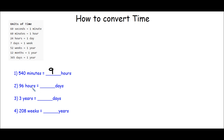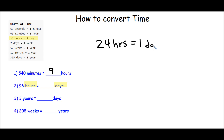Let's take a look at our second problem. We have 96 hours equals how many days. Let's first find the relationship in our reference chart between hours and days. Looking for hours and days — here I have 24 hours equals 1 day. So I'm going to write that down: 24 hours equals 1 day. I'm going to draw my line under those and plug in what I know from the problem — I know 96 hours, so I'll plug in 96 here.